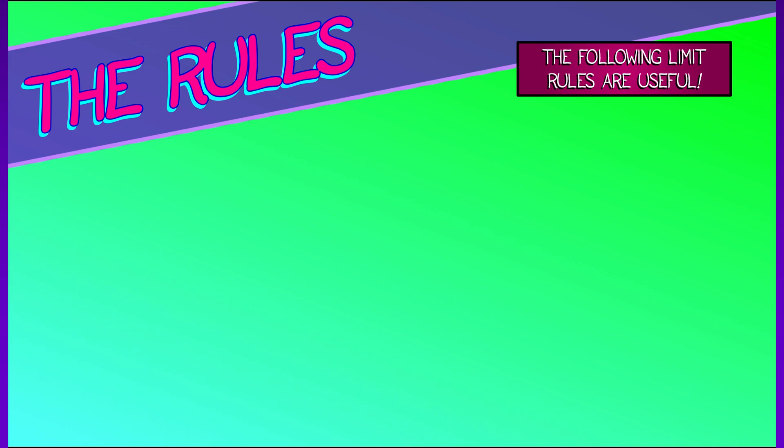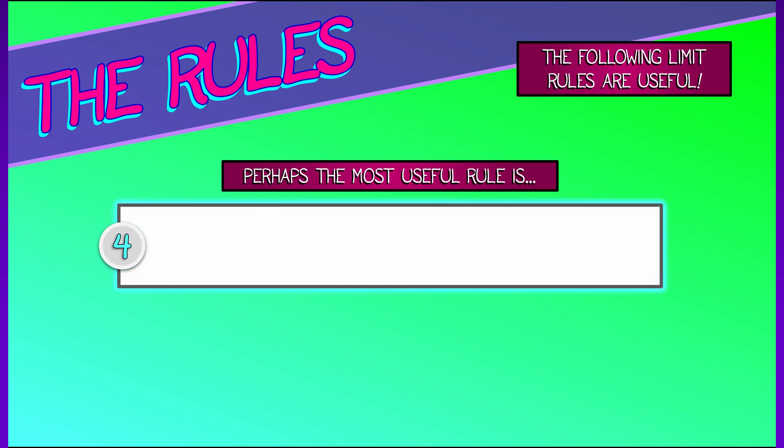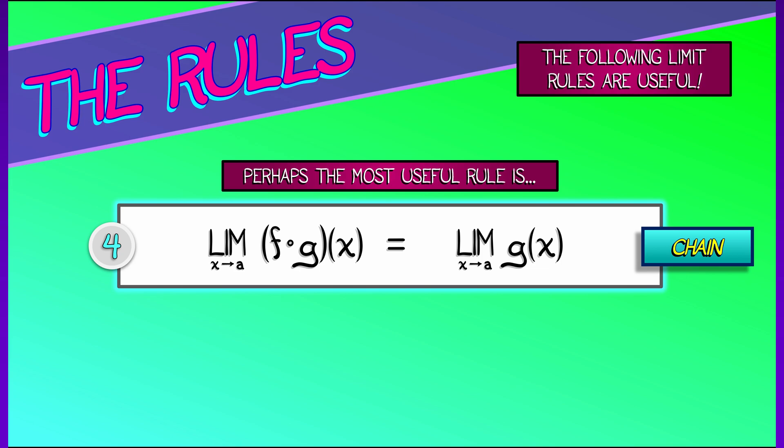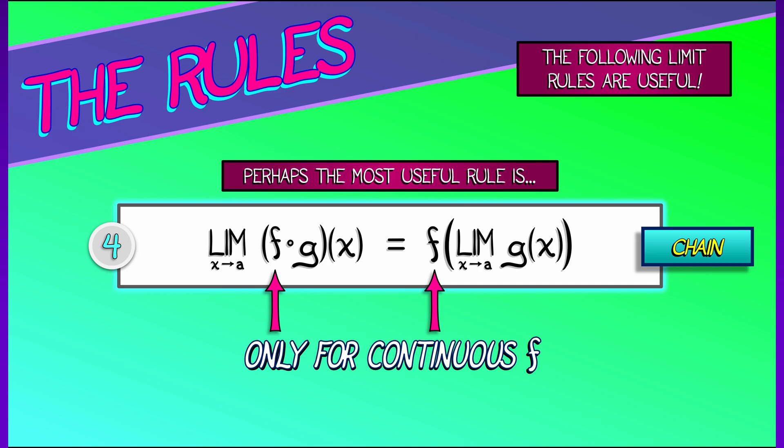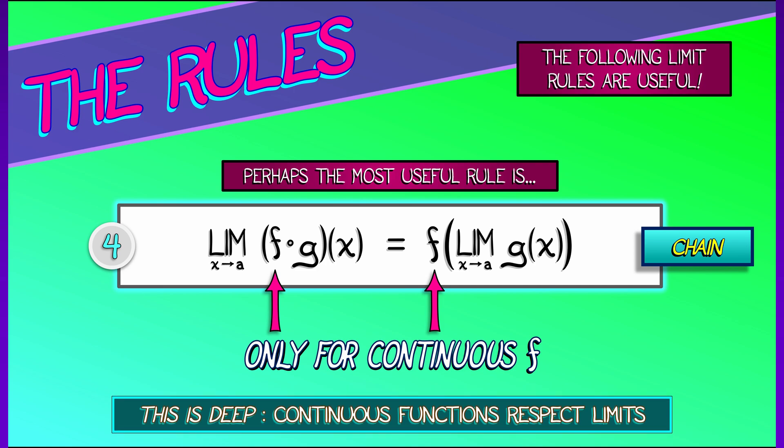These three rules are really great, but there's a fourth that is even more useful and universal. This is something like a chain rule. This says that if I take the composition f composed with g and look at the limit of that as x goes to a, then what we get is the limit of g as x goes to a fed into f or composed with f. Now, you've got to be a little bit careful here. This only applies when f is a continuous function, but this is super useful and super deep. There's something about the fact that continuous functions respect limits that really gets to the heart of what continuity means.